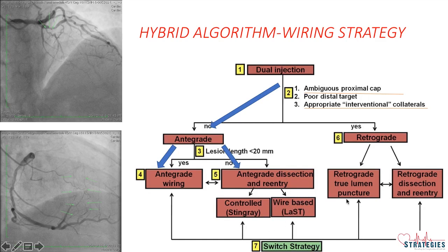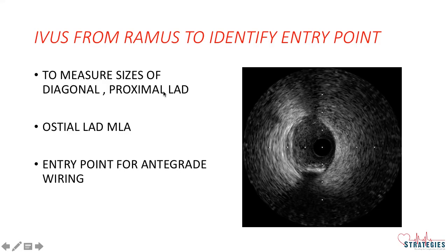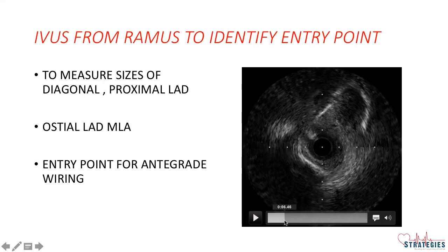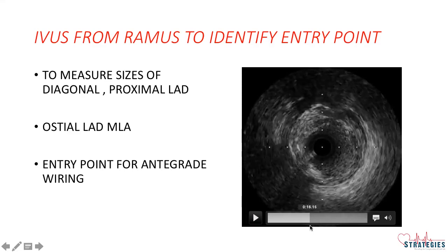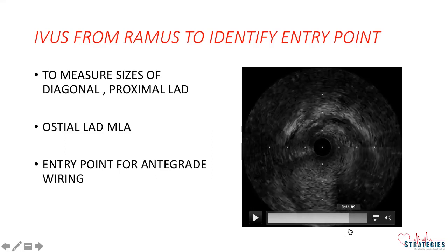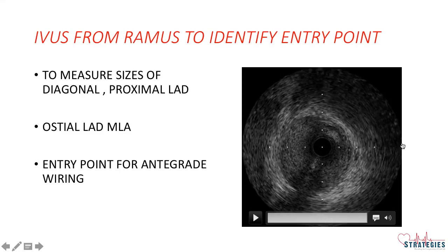If this does not work then we may have to go retrograde to complete the procedure. As a part of analysis, we did IVUS from RAMUS to identify the entry point, to measure the sizes of diagonal and proximal LAD, to see the ostial LAD plaque, whether to include ostial LAD into stenting or not, and also the entry point for antegrade wiring. From RAMUS you can see this is the entry point for LAD, and this proximal LAD is showing a good-sized vessel almost 4 mm, and this is ostial LAD with mild plaque but overall luminal area is looking good.